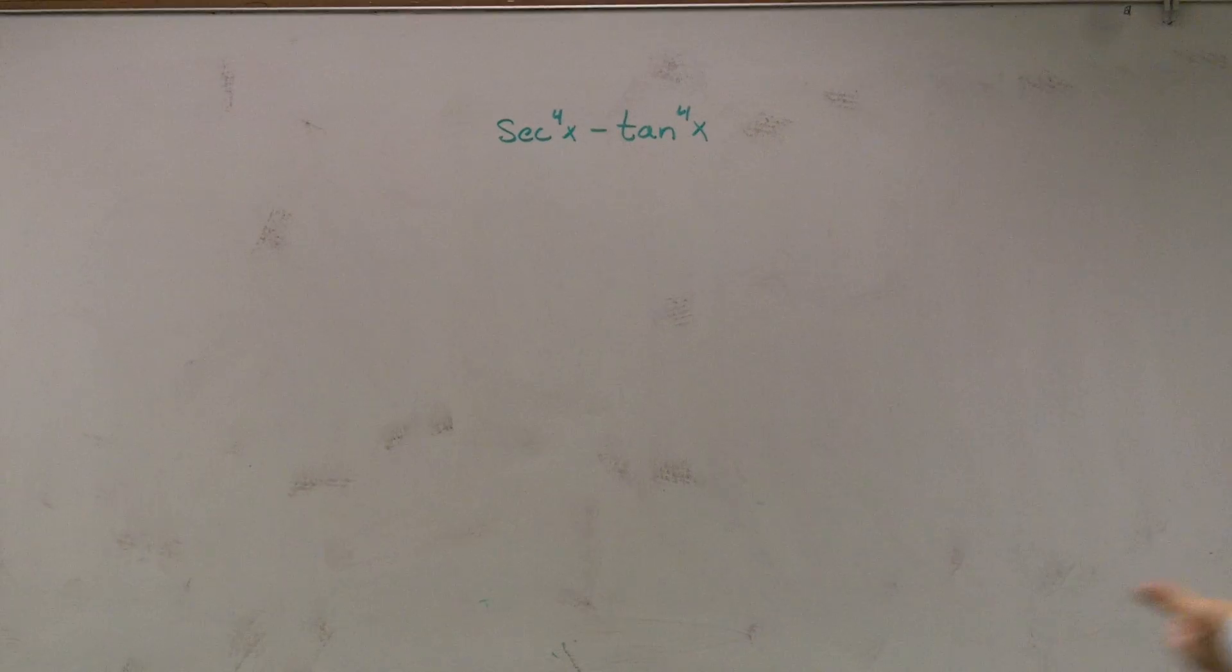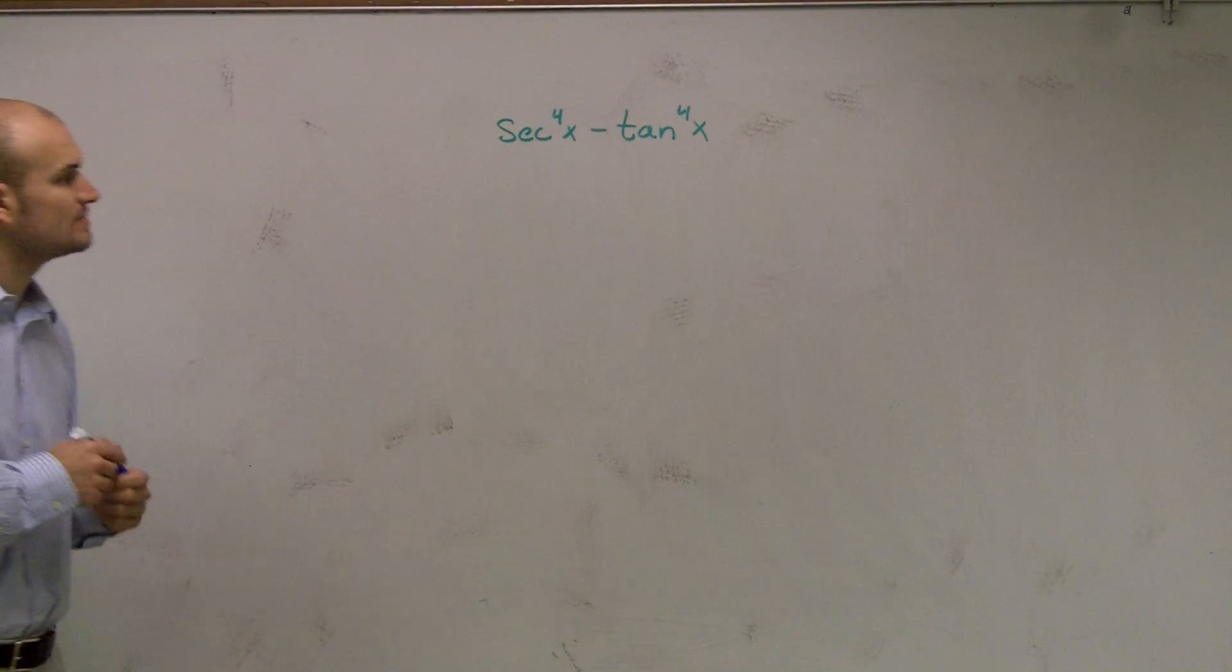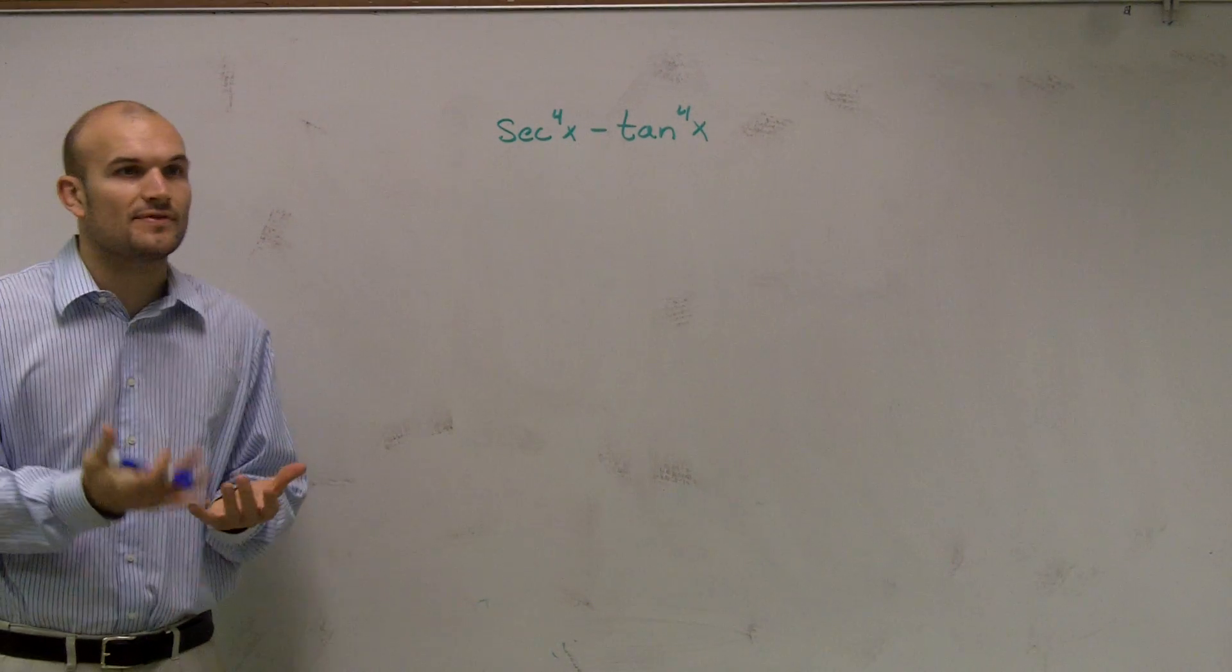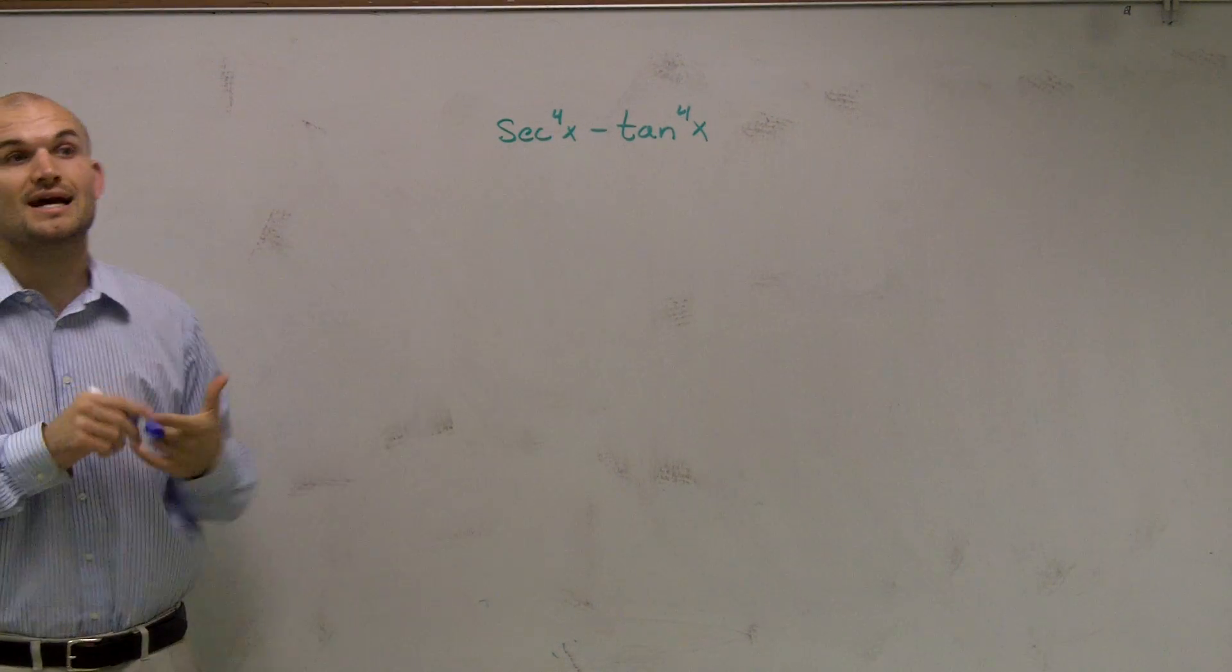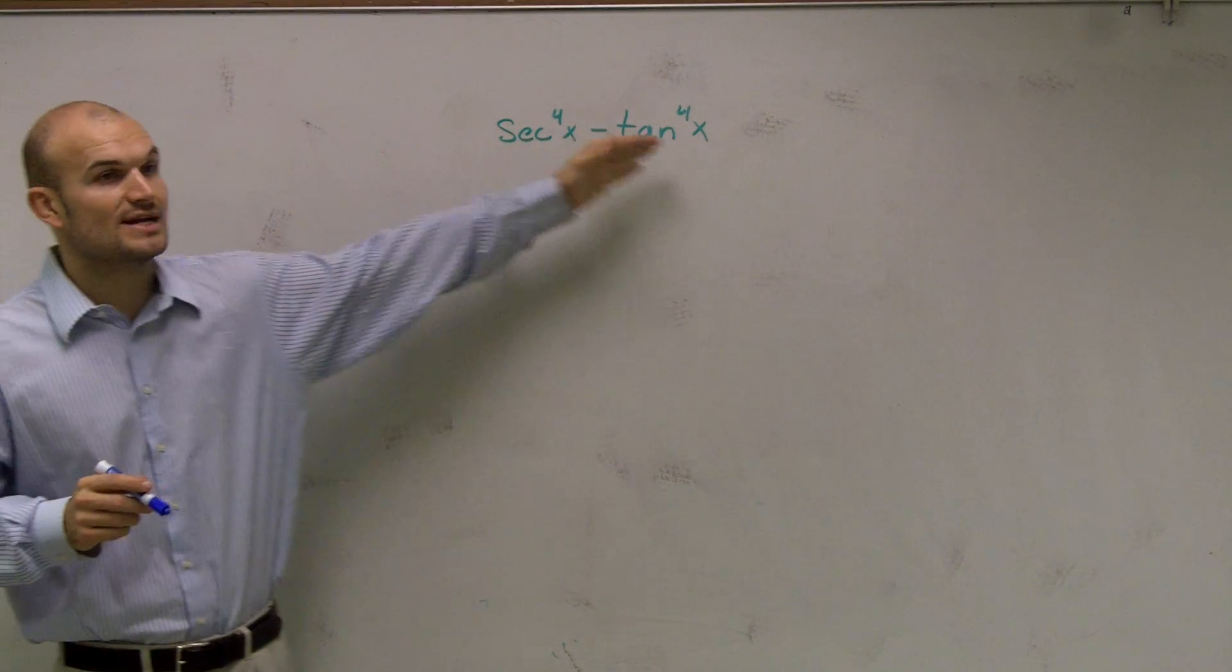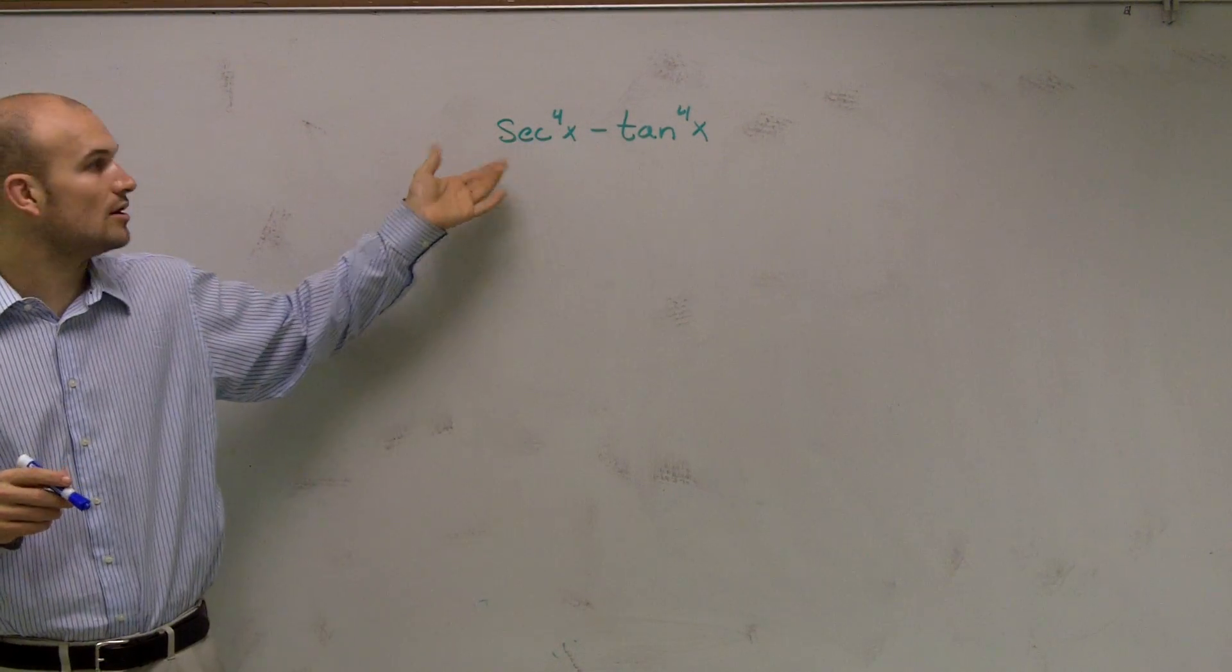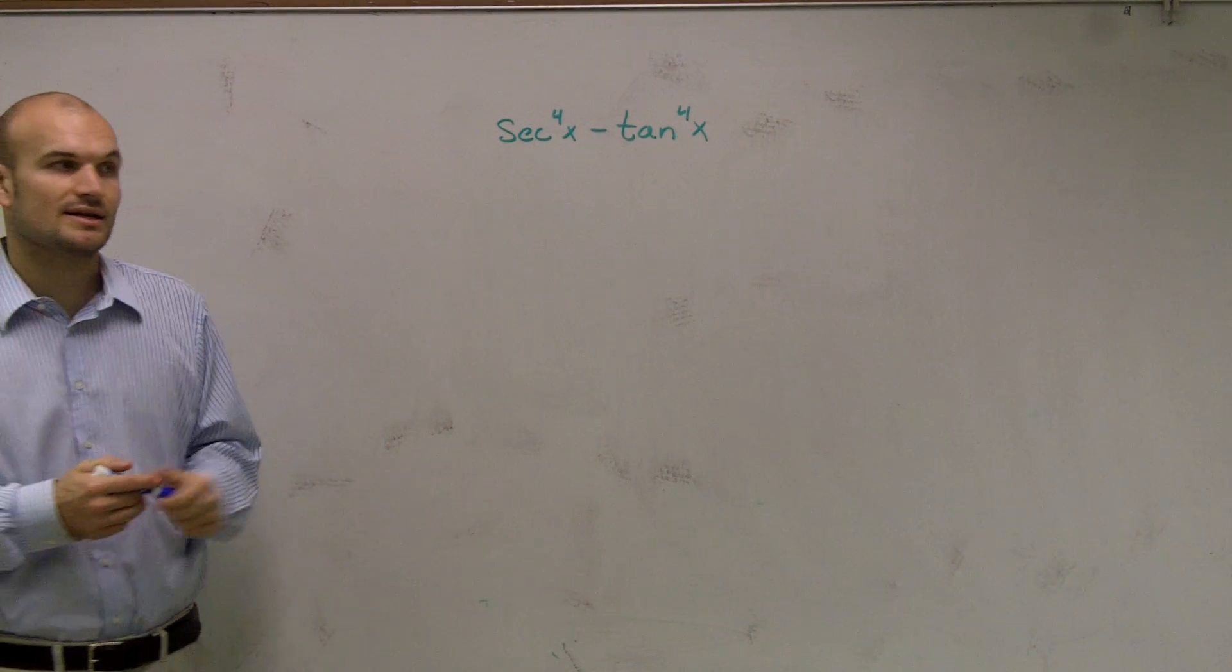But this isn't a problem that you're going to automatically go into unless you start thinking about what are all the options. The only thing we know with our trig identities is we know what sine squared and cosine squared mean. So if I can somehow transform these to secant squared and tangent squared, then I can use my Pythagorean identity.